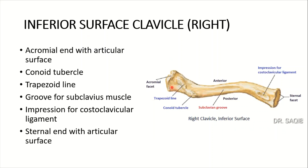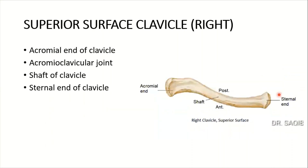Looking at the inferior surface of the right clavicle: near the acromial end you can see the articular facets. On the posterior aspect is the conoid tubercle, and near the acromial end inferiorly is the trapezoid line — both very important. In the middle one-third of the inferior surface is the subclavian groove, where the subclavius muscle attaches. Near the sternal end is the impression for the costoclavicular ligament.